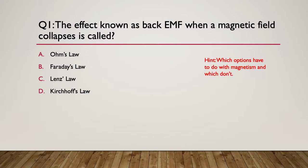Here's the hint: which options have to do with magnetism and which don't? Can you kind of filter them out if you don't know the answer?